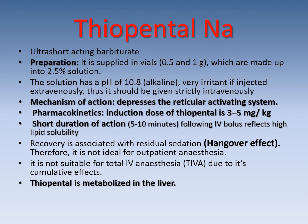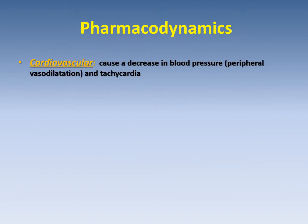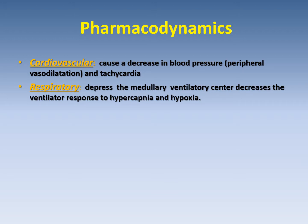Thiopental is metabolized in the liver. Pharmacodynamics: its cardiovascular effect causes a decrease in blood pressure because it causes peripheral vasodilatation, but it causes tachycardia. Regarding respiration, it depresses the medullary ventilatory center and decreases the ventilatory response to hypercapnia and hypoxia. It may cause laryngospasm and hiccup.